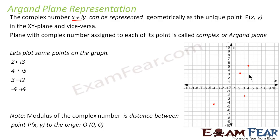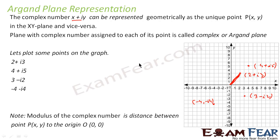So these are the representations. This point has x = 2, y = 3, so this is 2 plus i3. This one is 4 plus i5 because x is 4 and y is 5. This one is 3 minus i2, and this one is minus 4 minus i4. Also note that the distance between the point (x, y) and the origin is nothing but the modulus — that is root of x² plus y². So for 2 plus i3, modulus is root of 4 plus 9, which is root 13.